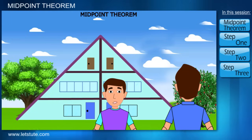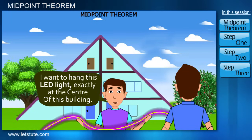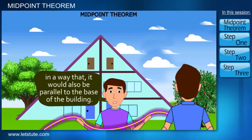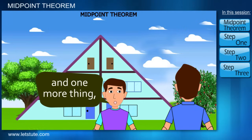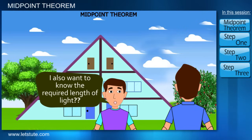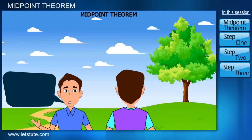I want to hang this LED light exactly at the center of this building in a way that it should also be parallel to the base of the building. Okay, that's it? Yes, and one more thing, I also want to know the required length of the light.